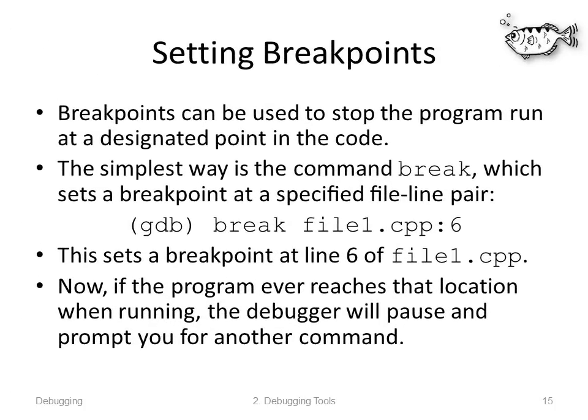Breakpoints can be used to stop the program at a designated point in the code. The simplest way is the 'break' command, which sets a breakpoint at a specified file-line pair. For example, to set a breakpoint in file1.cpp at line 6, you write 'break file1.cpp:6'. If the program ever reaches that location, the debugger pauses and prompts you for another command. Of course, if it never reaches that location, it won't stop there.